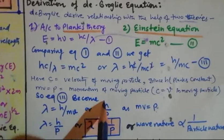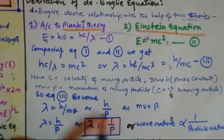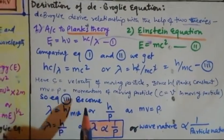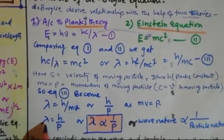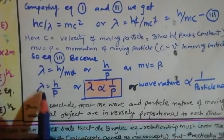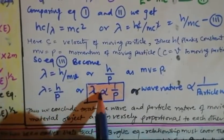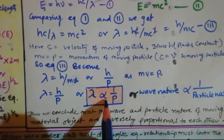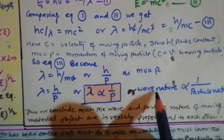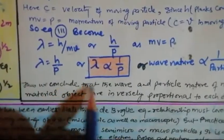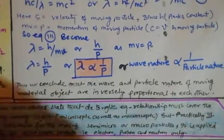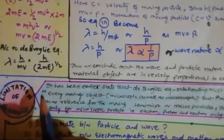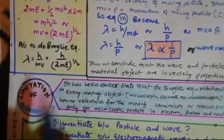Since mv equals p (momentum), we can write lambda = h/p. Lambda is inversely proportional to p — lambda represents wave nature and p represents particle nature. This means wave nature is inversely proportional to particle nature. We thus conclude that the wave and particle nature of moving material objects are inversely proportional to each other.